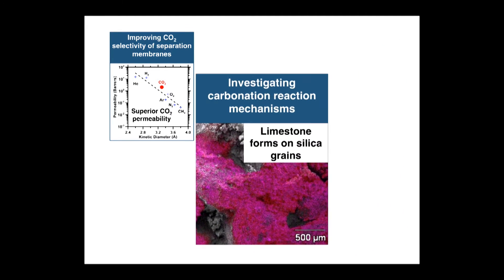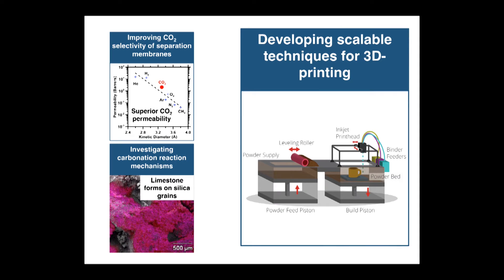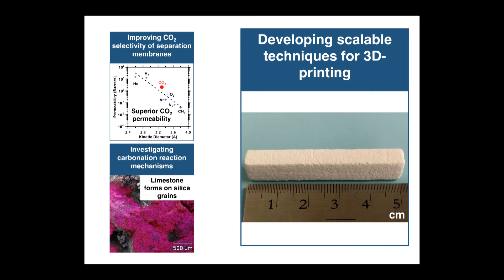Finally, we've been working on developing scalable processes for 3D printing of building materials. This is an example of a binder jetting printer, which deposits layers of an adhesive binder onto powders layer by layer to make a 3D object. We are looking at how to integrate this carbonation process with 3D printing and to create material components with spatially varied mechanical properties.